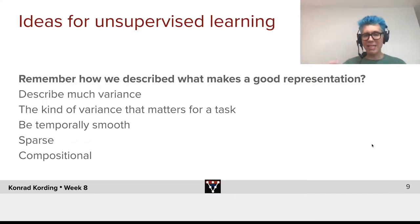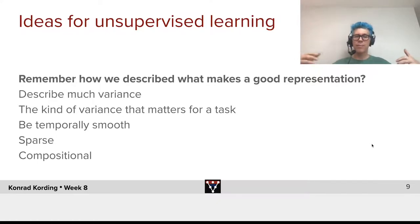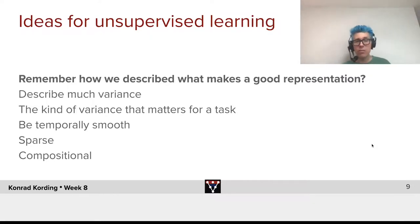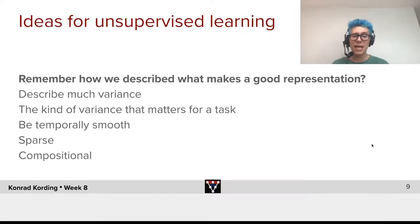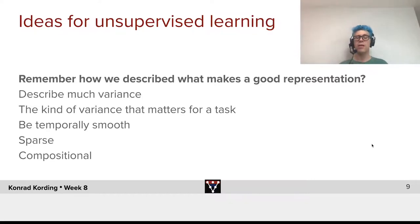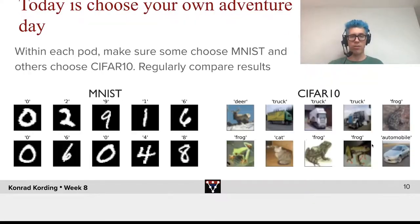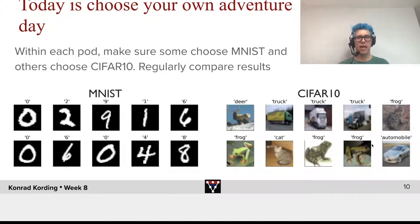Remember that we had this exercise where we said: what makes for a good representation? We said much variance should be described — the kind of variance that matters for a task — it should be temporally smooth, sparse, compositional, and so forth. Today we will take some of these ideas and implement them.